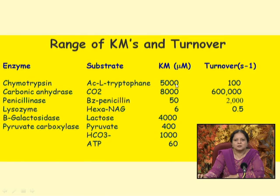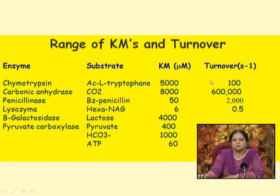Km values range from 5000 micromolar to 6 micromolar for different enzymes. Km depends on active site geometry and the complementarity of binding possible with a given active site. The same enzyme from different sources may show different Km values. Turnover numbers can vary from less than 1 per second to about one million per second — highly efficient enzymes have very high turnover numbers.